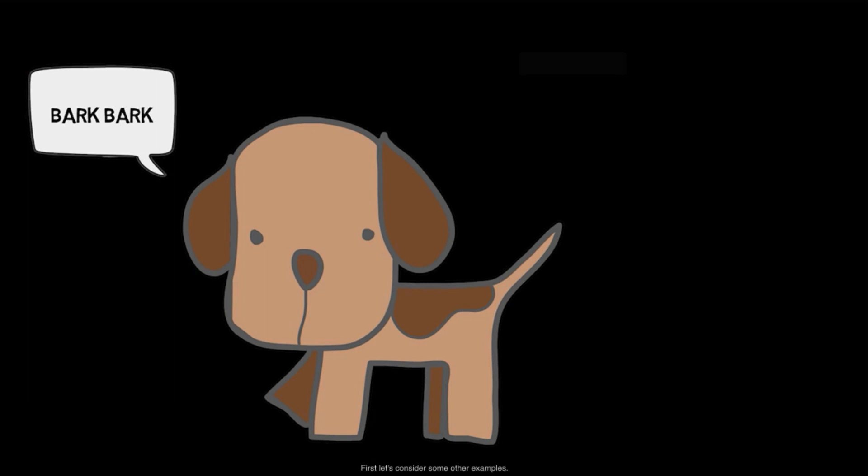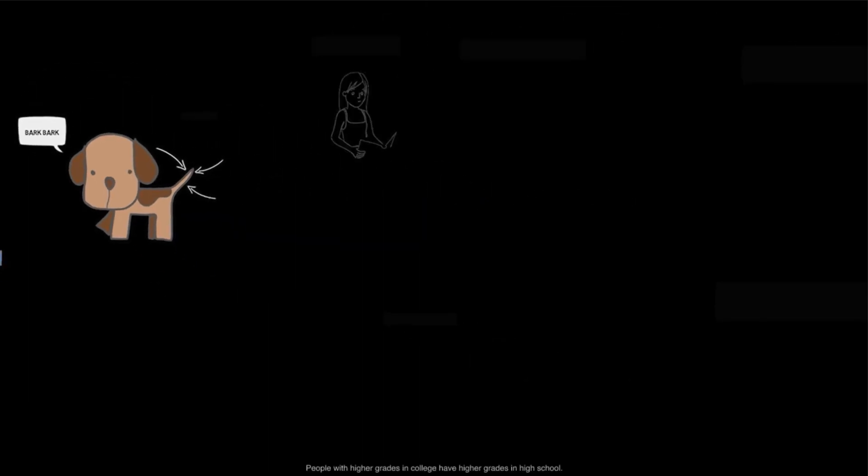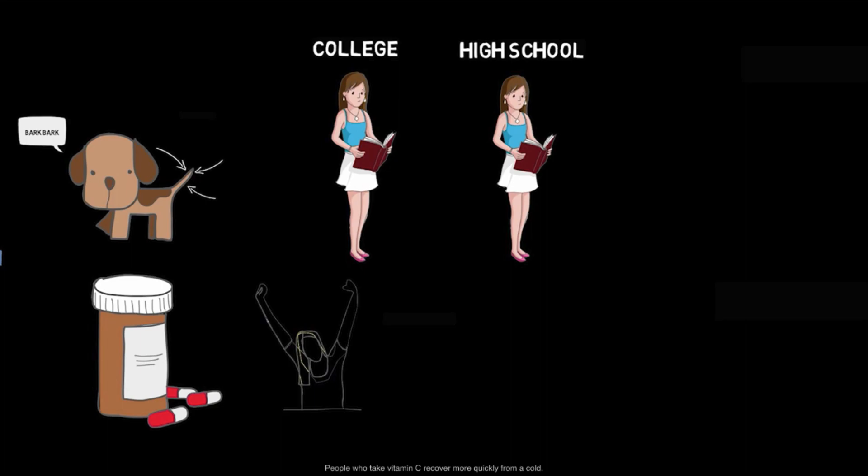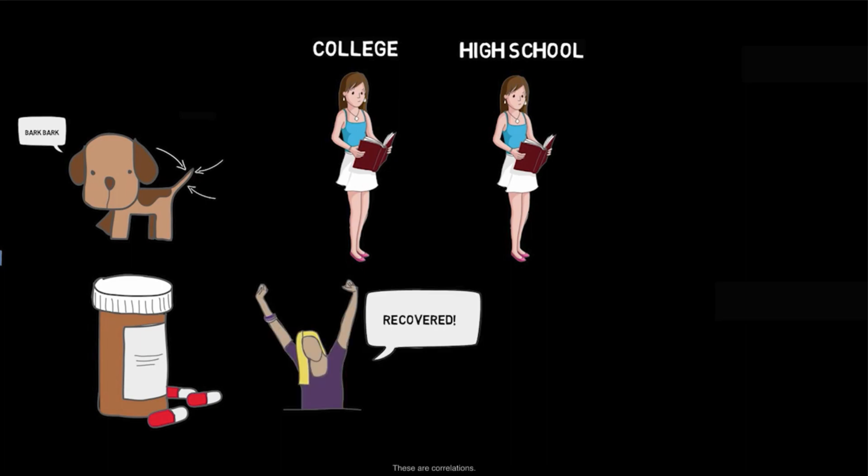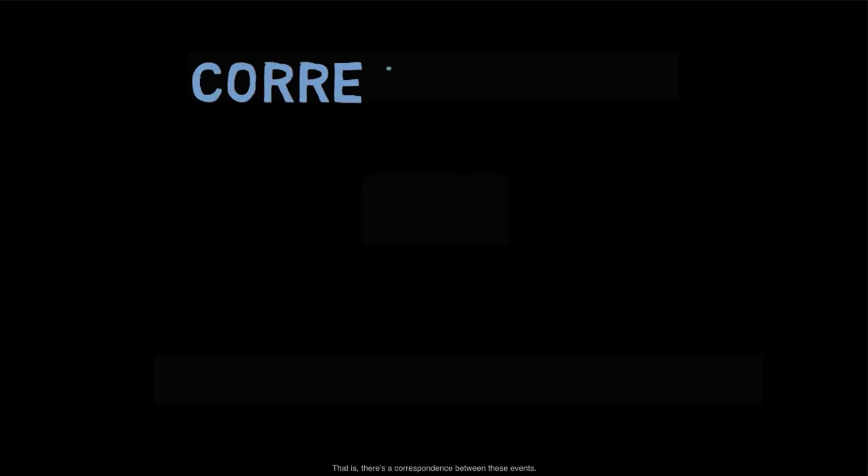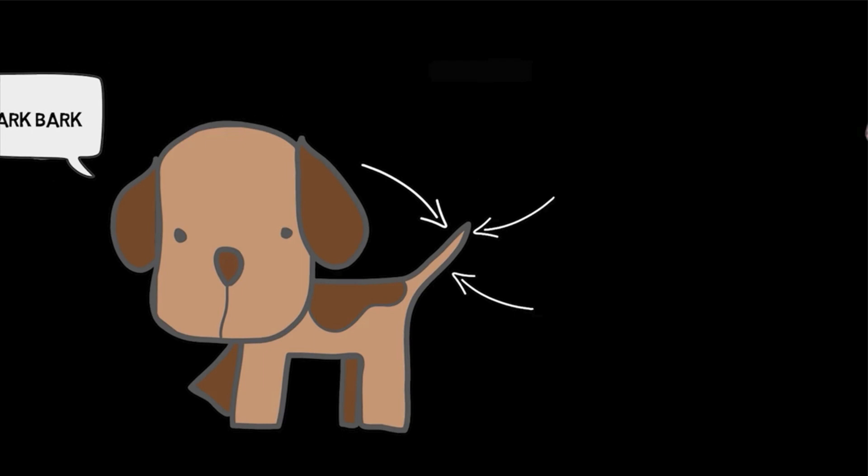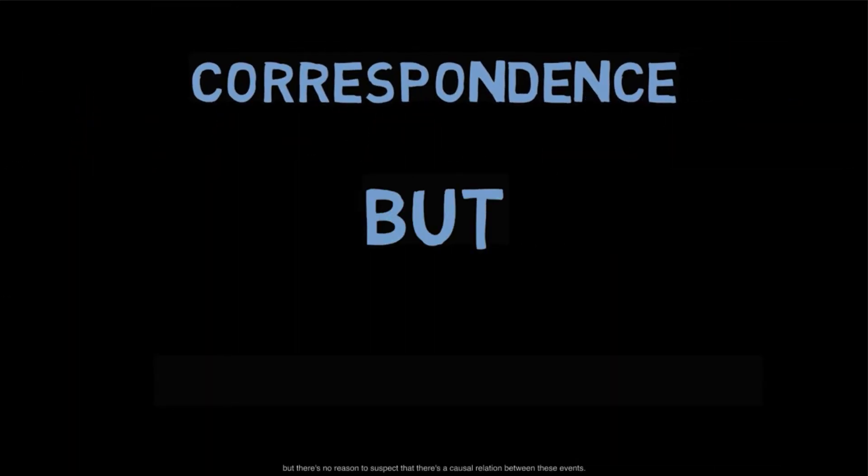First, let's consider some other examples. Fido barks when his tail wags. People with higher grades in college have higher grades in high school. People who take vitamin C recover more quickly from a cold. These are correlations. That is, there's a correspondence between these events. For example, the dog, Fido, barks when his tail wags.